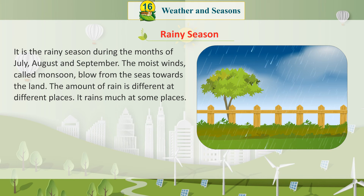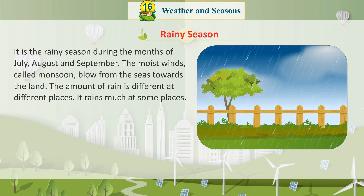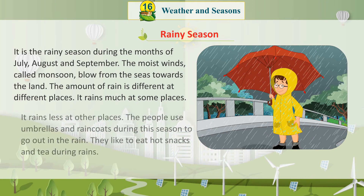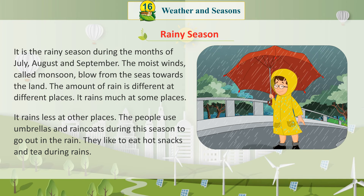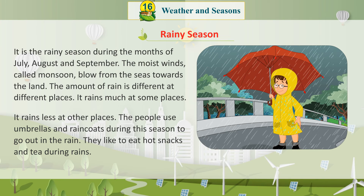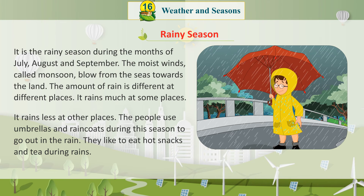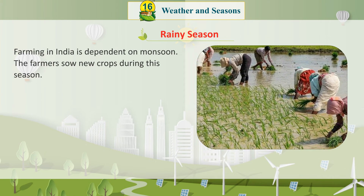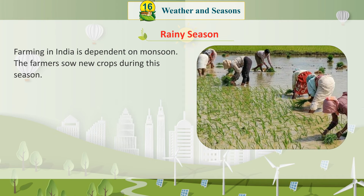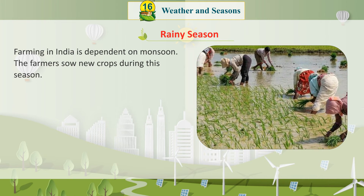The amount of rain is different at different places — it rains heavily at some places and less at others. People use umbrellas and raincoats during this season to go out in the rain. They like to eat hot snacks and tea during rains. Farming in India is dependent on monsoon, and farmers sow new crops during this season.